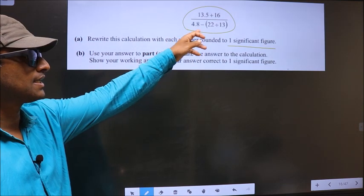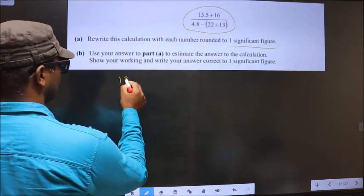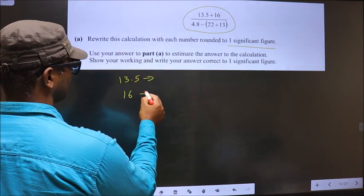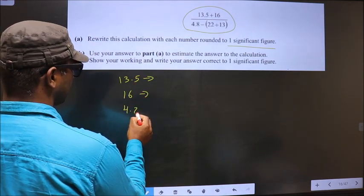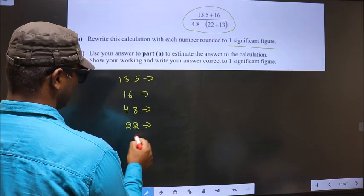So first, numbers present in this are 13.5, 16, 4.8, 22, 13.